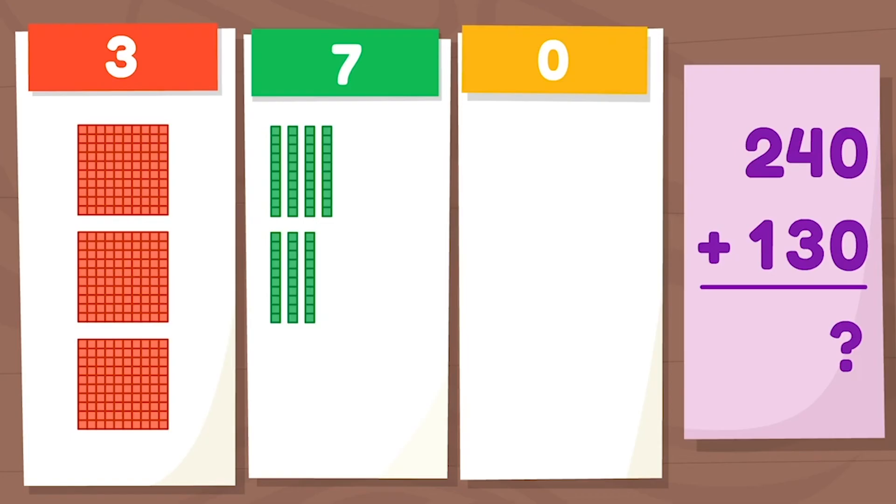we have total. We have one, two, three hundreds, one, two, three, four, five, six, seven tens, and zero ones.